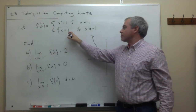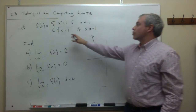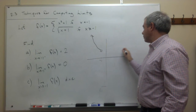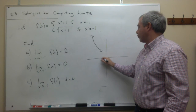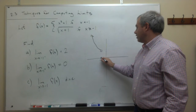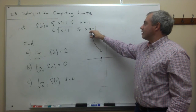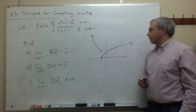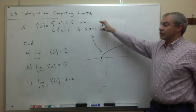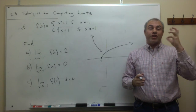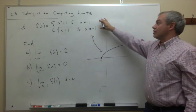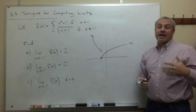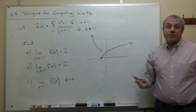The second piece, square root of x plus 1, is the square root function translated 1 unit to the left. Since this piece applies for x greater than or equal to minus 1, I fill in a closed dot at minus 1 and draw the square root curve from there. Some people find it easier to think graphically rather than numerically or algebraically.